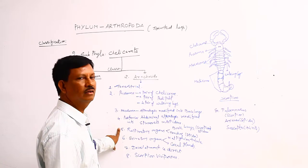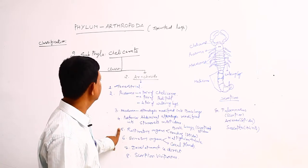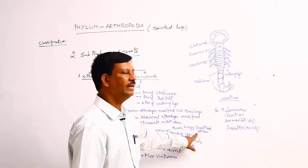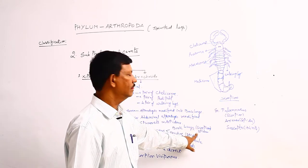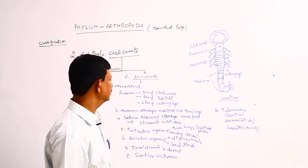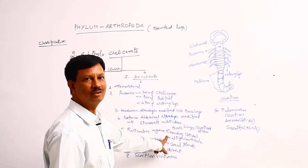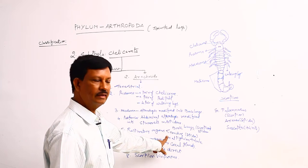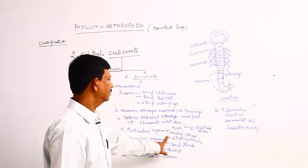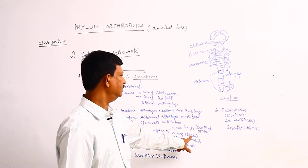The main respiratory organs in this class are the book lungs. In scorpions as well as in some spiders, respiratory organs are book lungs. But in some spiders, trachea is also present. That is also a character of terrestrial animals. Both book lungs as well as trachea are found in some spiders.